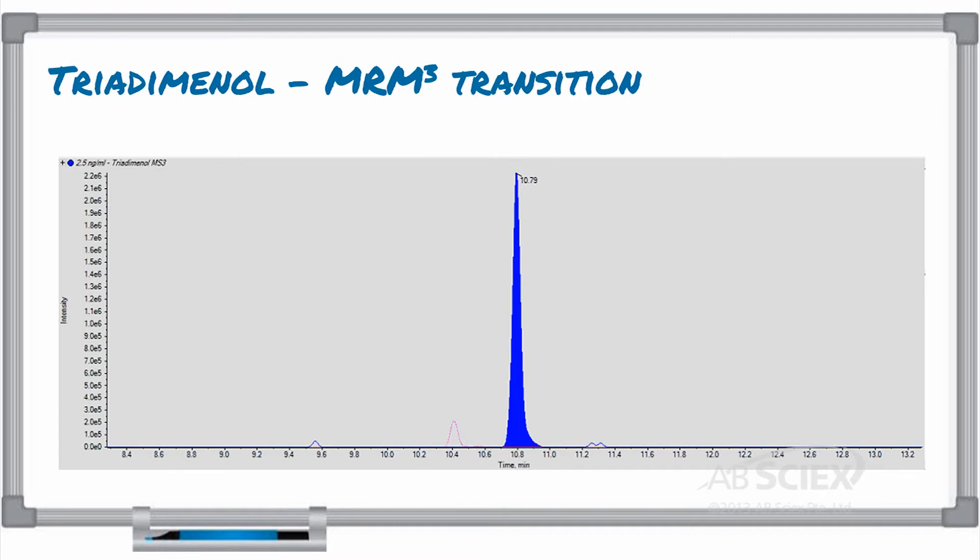By adding an MRM-cubed or MS to the third experiment to our acquisition method, we were able to add selectivity to this analysis to ensure we were detecting and quantifying only our compound of interest and not an isomer. In this case, the second generation fragment specific to triadminol showed a chromatogram with only a single peak for our compound of interest.